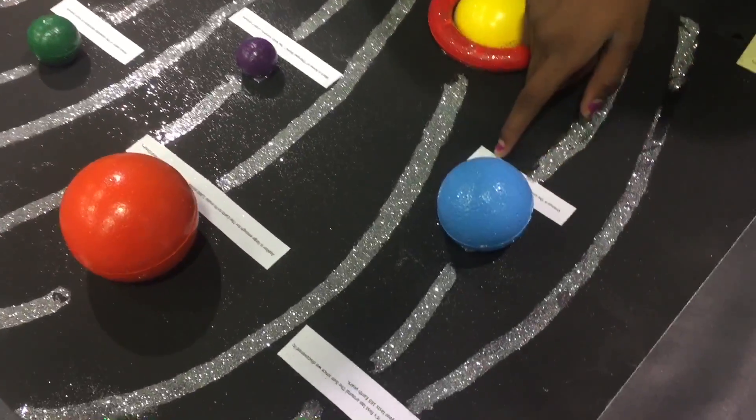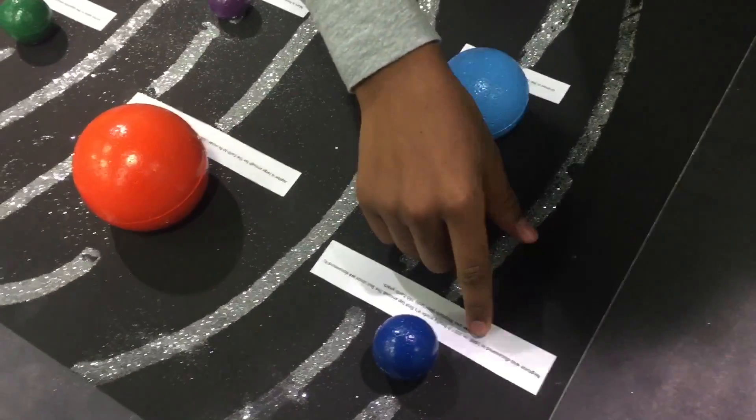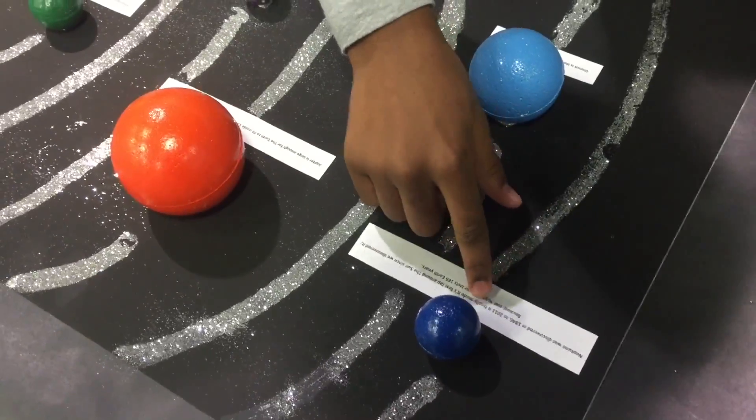Uranus is the coldest planet in the solar system. Neptune was discovered in 1846.